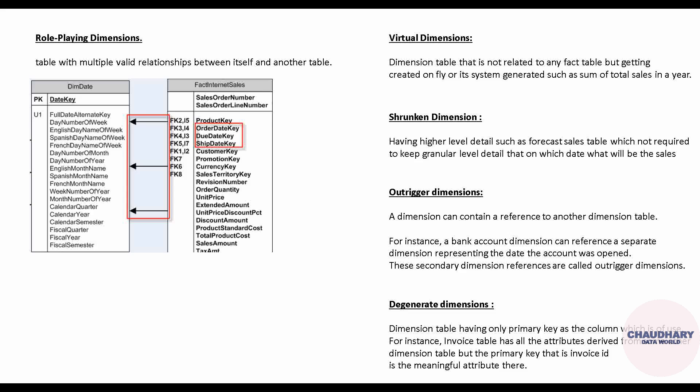Hope you got the degenerate, outrigger, shrunken, and virtual dimensions — because they might sound confusing. If you read the literature thoroughly, you will understand. If not, do some research on the web, and if you still find confusion, let me know in the comment section so I can explicitly explain some of these dimensions in a separate video. That was all about this video. I hope you found it very helpful. Kindly like the video, subscribe to the channel, and see you in the next video with some other topic. Thanks again.